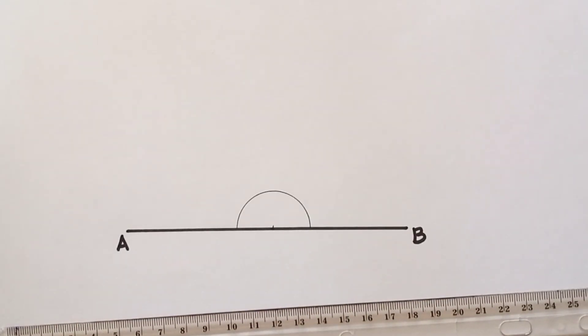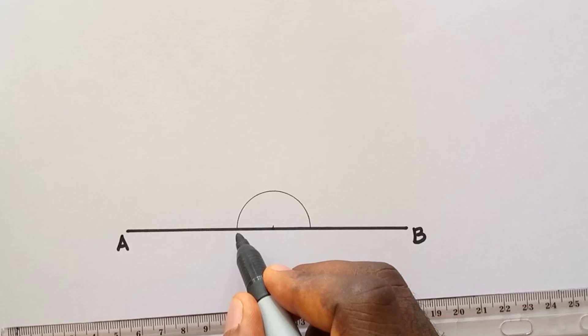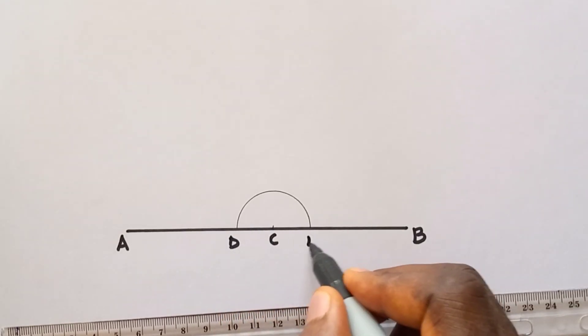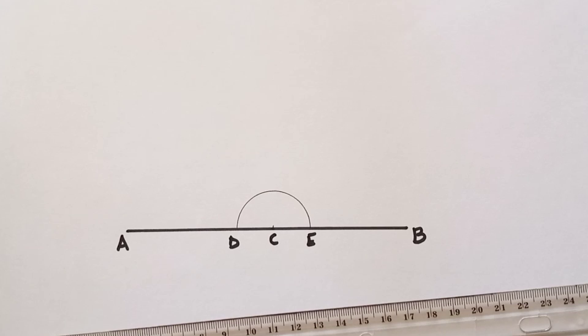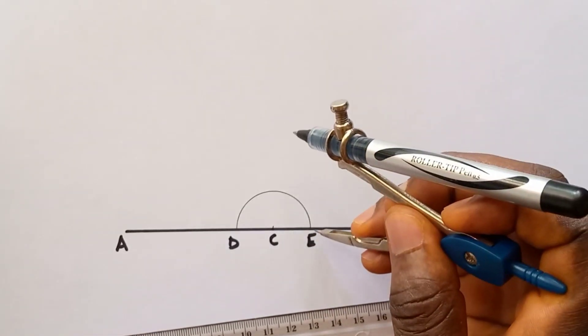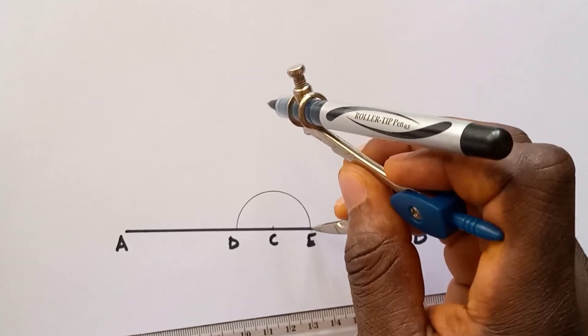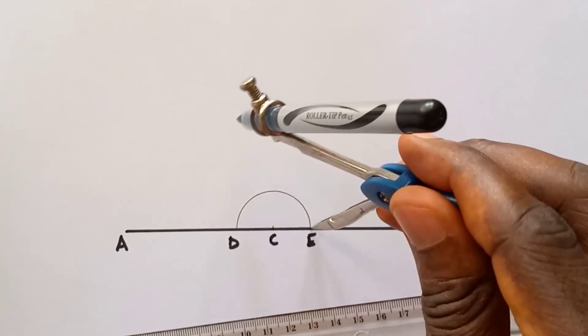So this is a semicircle. Now the next step is to label these points D and E. So this is our C, D, and E. Now to construct a perpendicular, you open your compass to your convenience, you stand at E, and you inscribe an arc.